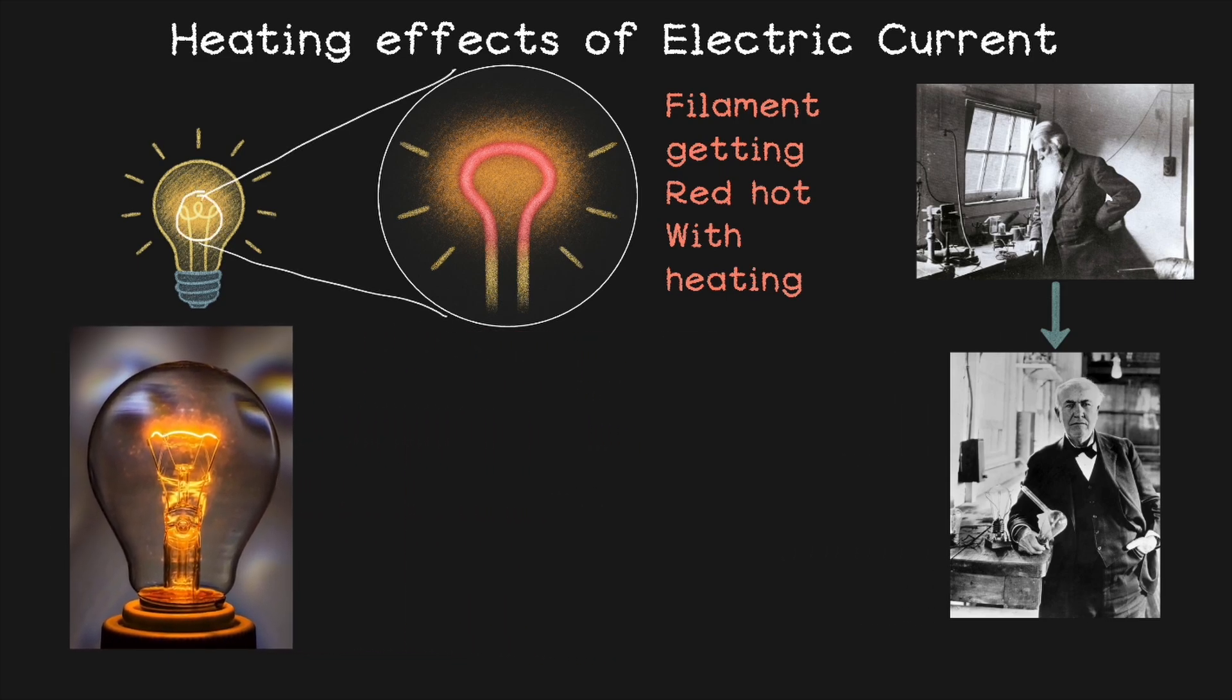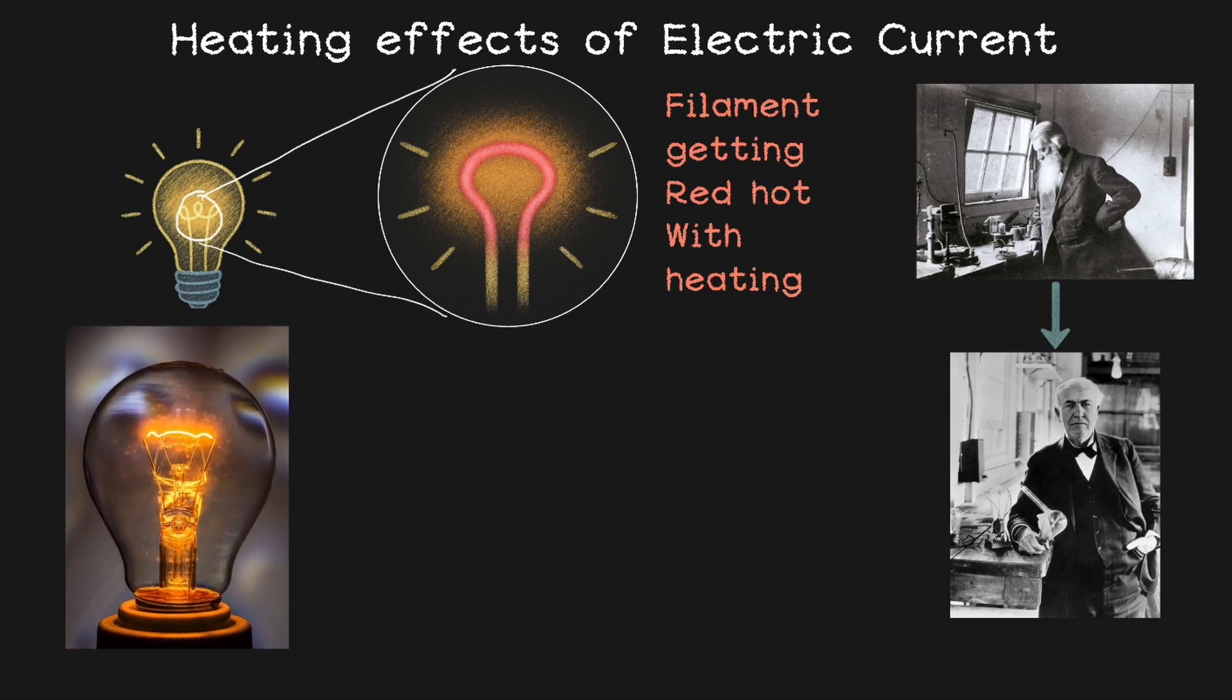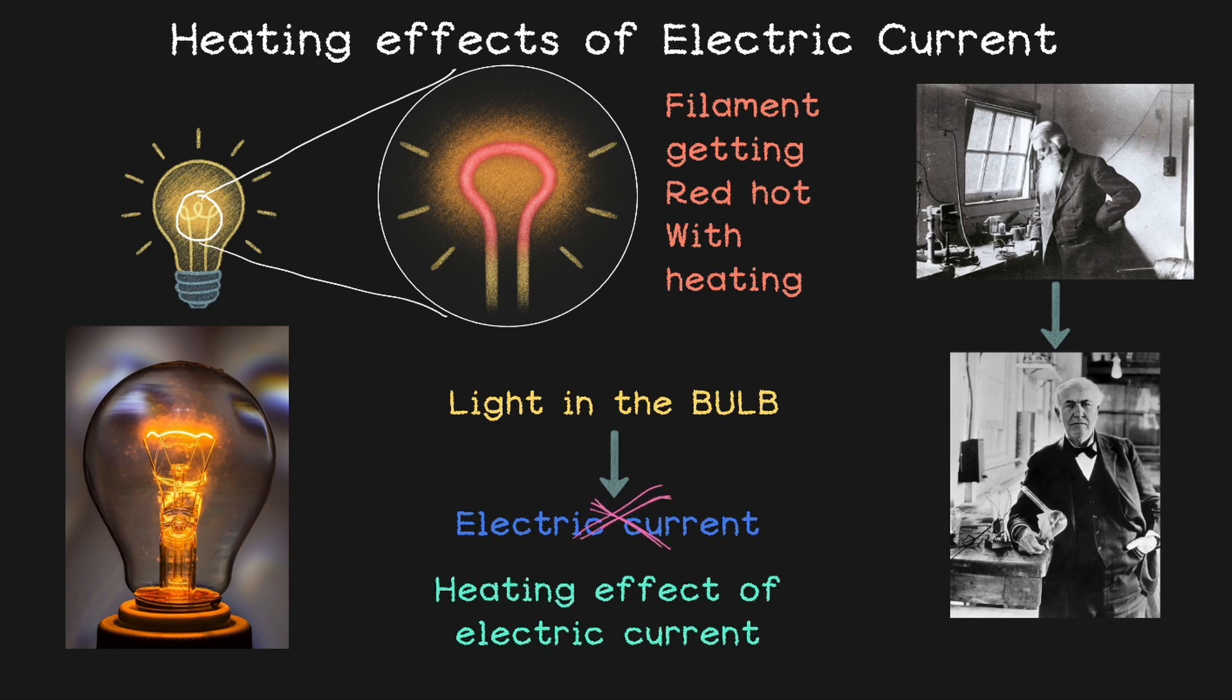So to understand this as a scientific inquiry, when electric current passes through the wire, the wire can get hot, a little warm in some cases or really hot in others. In other words, light that we get is not from the electric current itself but more due to the heating effect of electric current.